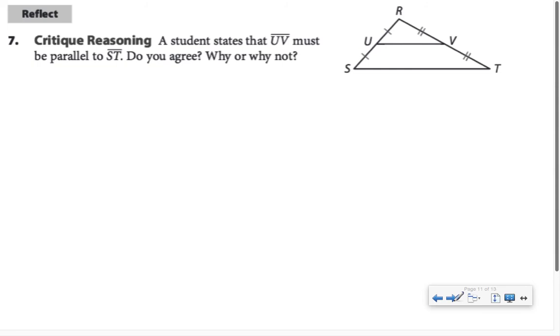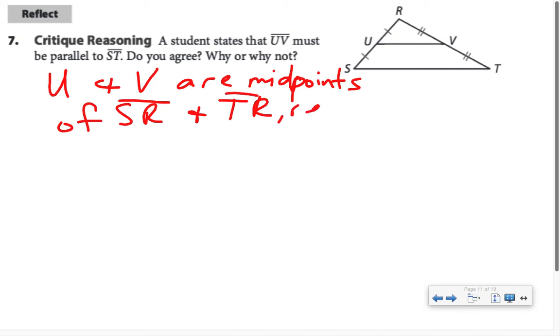In this reflect question, we have triangle RST with segment UV drawn into it, and a student states that UV must be parallel to ST. Do we agree? Why or why not? What I'd hope you'd realize is because of the markings, U and V are midpoints of SR and TR respectively.